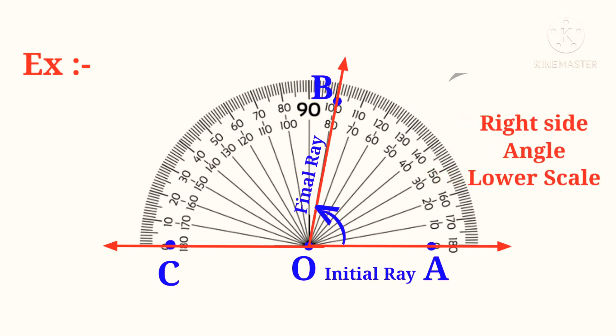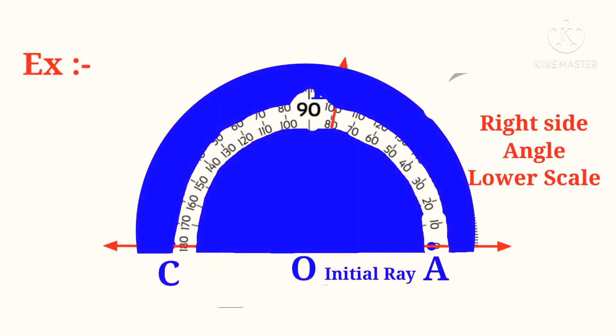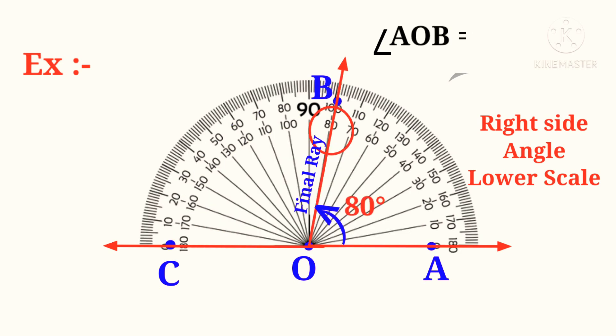To measure it, we have to use the lower scale: 0, 10, 20, 30, and so on up to 80. So the final ray OB is pointing 80 degrees. Therefore, angle AOB is 80 degrees.